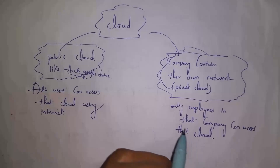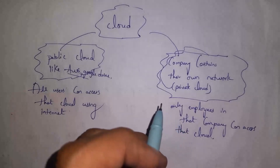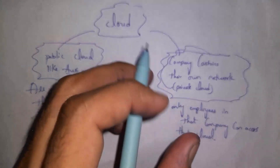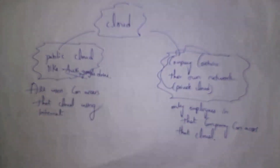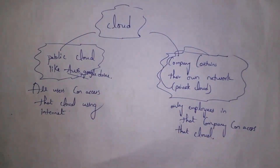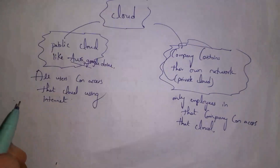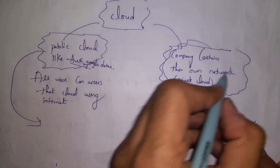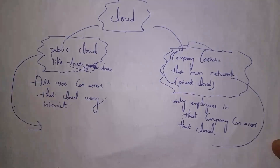Some companies contain their own cloud network and only employees in that company can use it. Outside people cannot use that cloud, and we call it a private cloud. So people can access a cloud network in two ways: public cloud access and private cloud access.